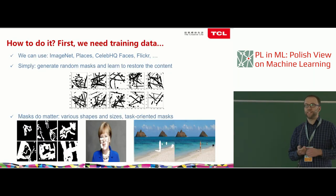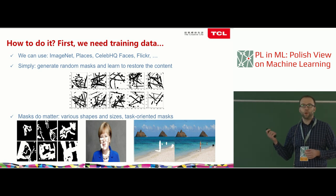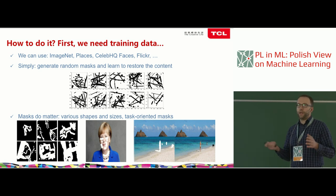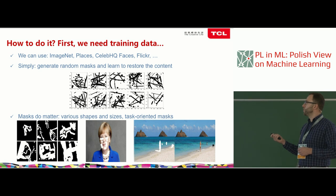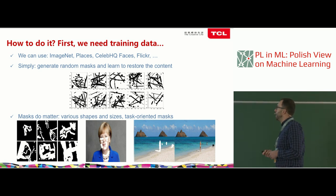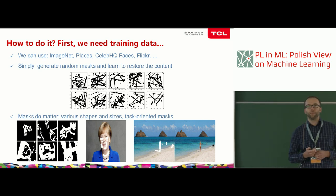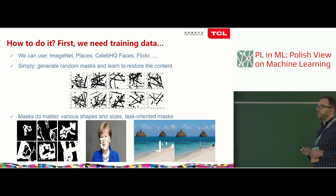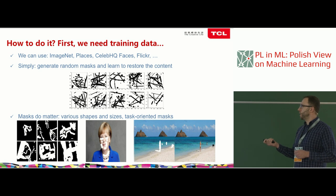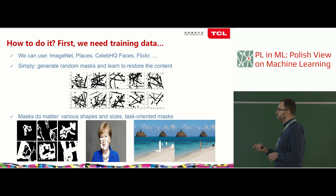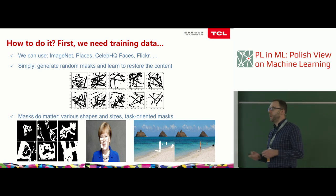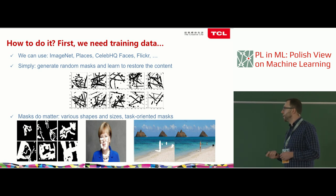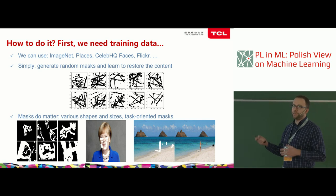How to do this step by step? First, we need training data. The good news is it's quite simple to get — we can use any photos, any existing databases like ImageNet, Places, and so on. The simplest option is to generate random masks and learn to restore the missing parts. Masks do matter: in the original paper they proposed creating diversified masks with different shapes and coverage.